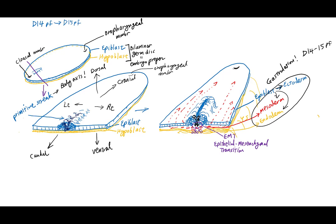As part of gastrulation, the cranial-most end of the primitive streak is special — cells here ingress towards the middle and center. This cranial end has a special name: the primitive node. Due to the ingression of cells towards the middle at this circular end, there is a central depression called the primitive pit. The longitudinal depression along the primitive streak itself is called the primitive groove. Notably, the cells ingressing from the primitive node do not undergo EMT; instead, they remain attached and move cranially in the midline as a cord of cells called the notochord.